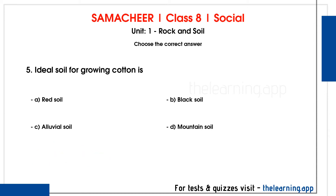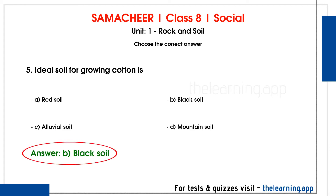Fifth question: Ideal soil for growing cotton is dash. Options are A. Red soil, B. Black soil, C. Alluvial soil, D. Mountain soil. Correct answer is option B, Black soil. Black soil is ideal for cotton cultivation.